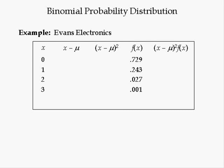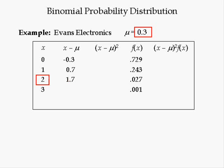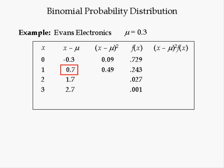To verify the shortcut variance, we complete the following table. With the mean equal to 0.3, we subtract it from each value of X: 0 minus 0.3 gives deviation negative 0.3; 1 minus 0.3 gives 0.7; 2 minus 0.3 gives 1.7; 3 minus 0.3 gives 2.7. Then we square each deviation from the mean: 2.7 times 2.7 is 7.29.